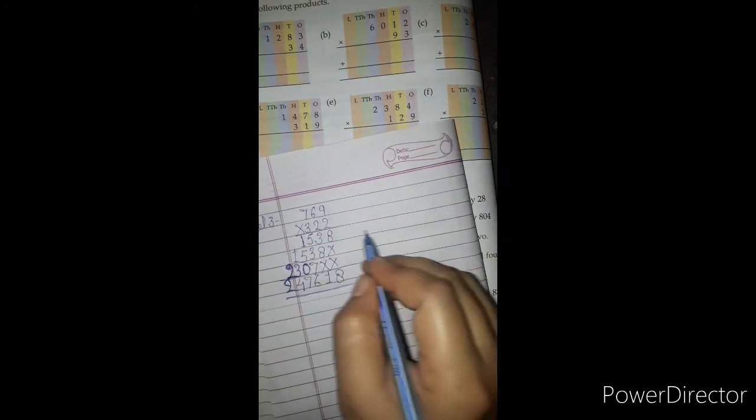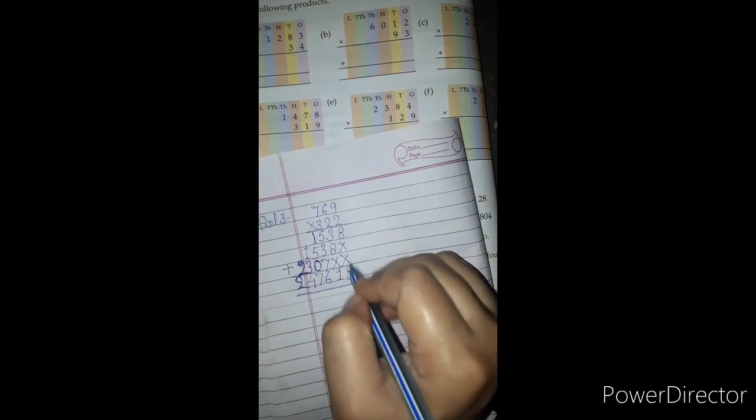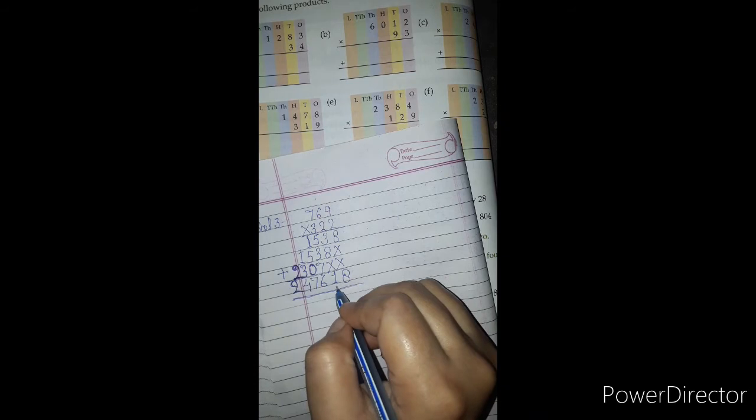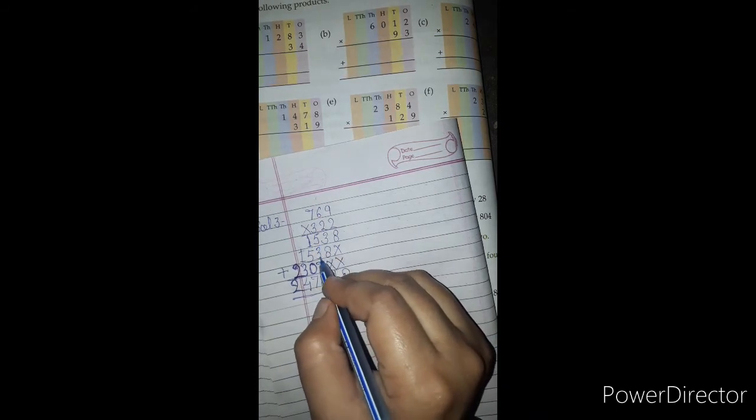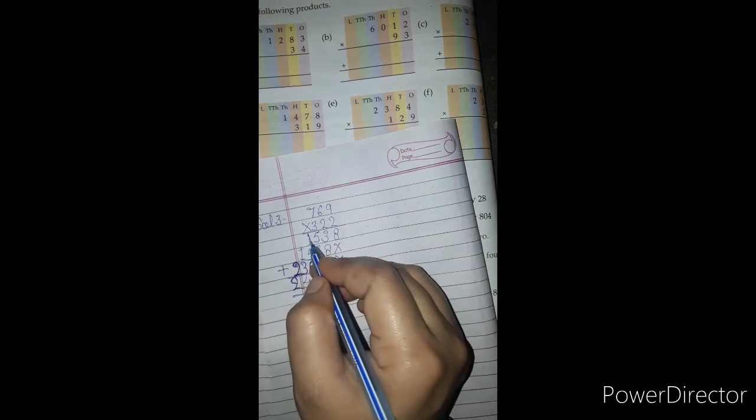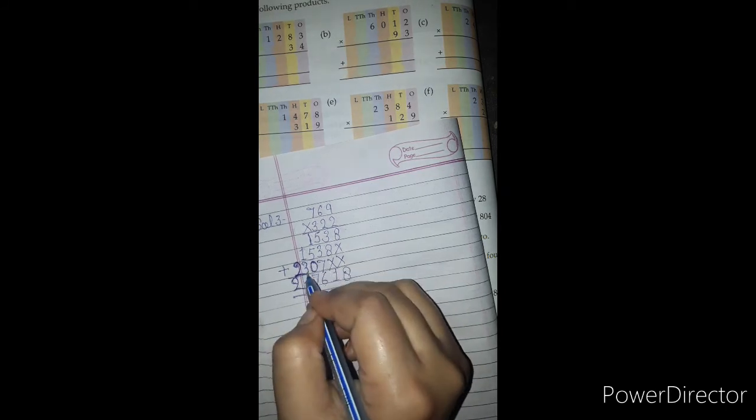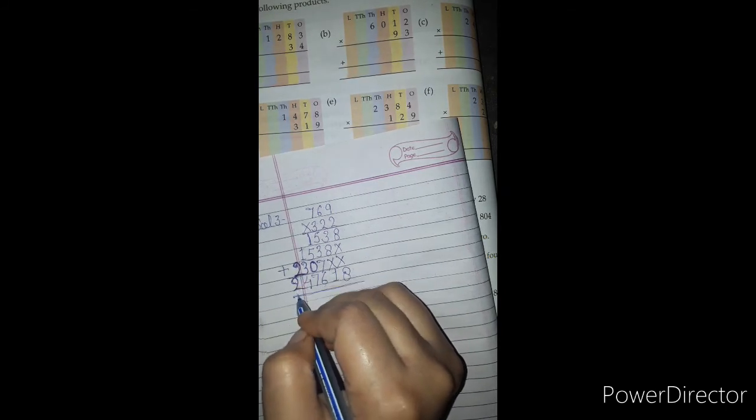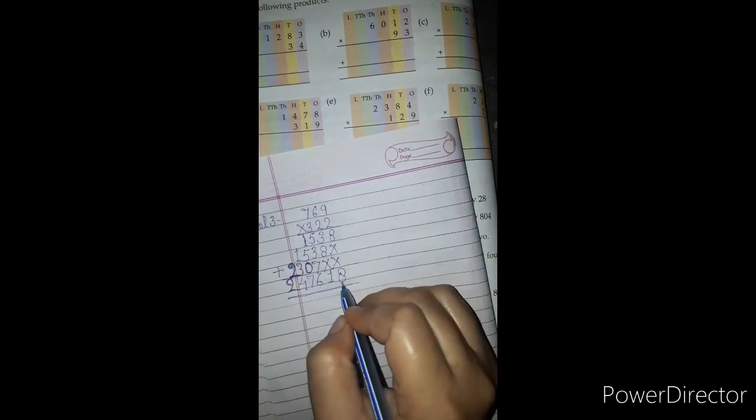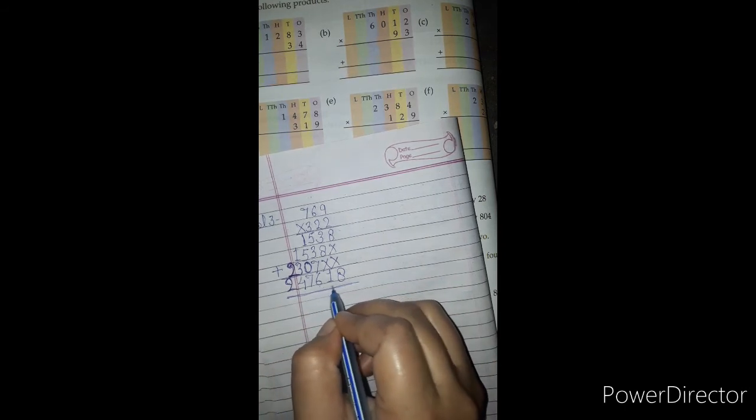Now we add it. 8, 3 and 8 is 11, write 1, carry 1. 5 and 1 is 6, add 1 is 7. 6 and 3 is 9, add 7 is 16, write 6, carry 1. 1 and 1 is 2, add 5 is 7, add 1 is 8. 1 and 3 is 4, add 2 is 6. Actually, 1 or 5 is 6, 1 or 3 is 4, and 2. So our answer is 247,618.